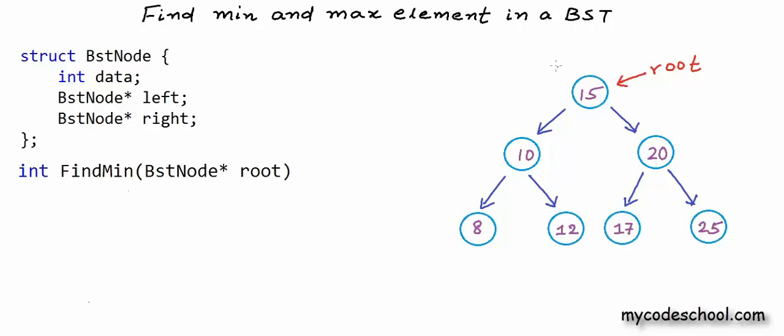We can start with a temporary pointer to root node. We can name this pointer temp or we can name this pointer current to say that we are currently pointing to this node. In my function here I have declared this pointer to BstNode named current, and initially I am setting the address of root in it. And with this pointer we can go to the left child with a statement like current equals current arrow left.